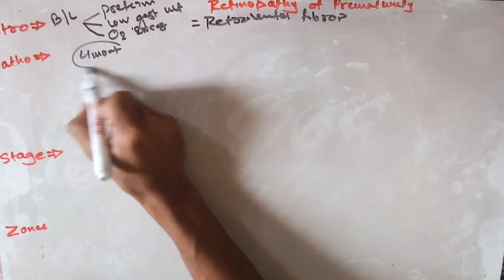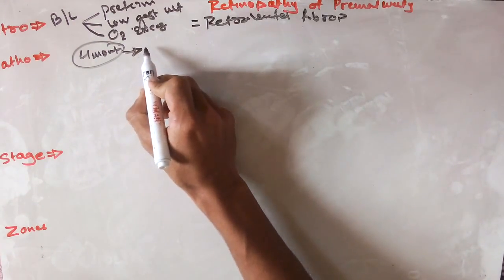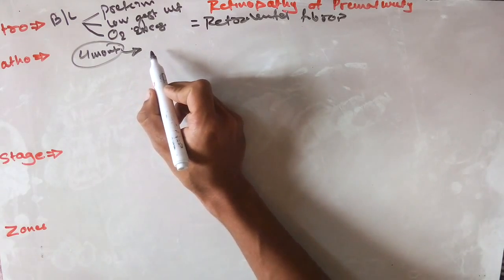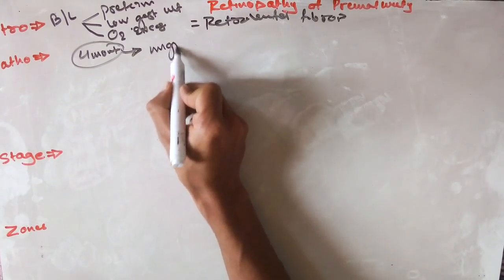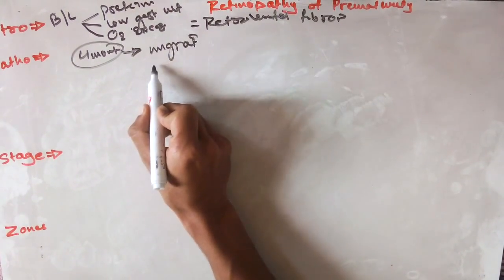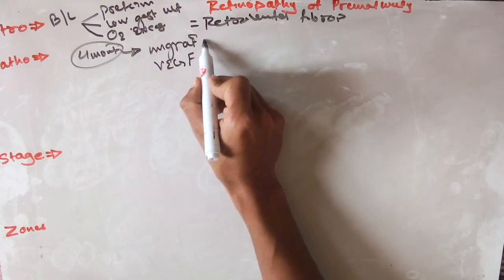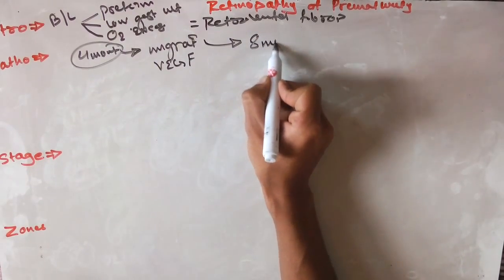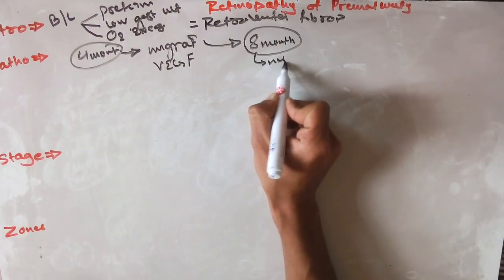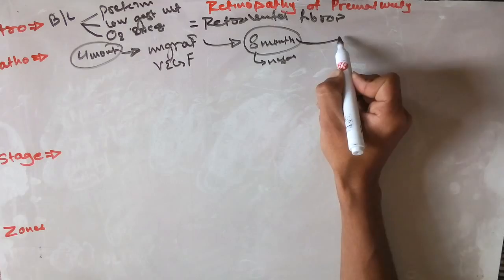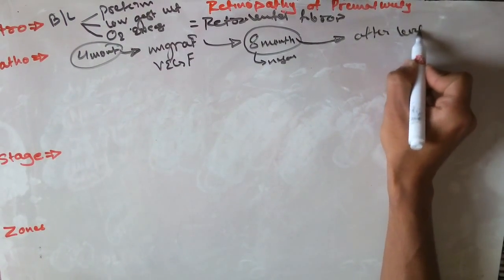Up to four months of gestational age there is no vasculature developed in the eye, but after four months the hyaloid vessels from the optic disc start to migrate. This migration is influenced by vascular endothelial growth factor. By the eighth month of gestation, the nasal blood vessels are developed but the temporal vessels are not yet developed.